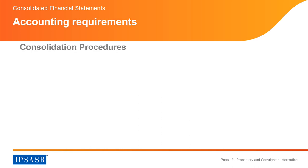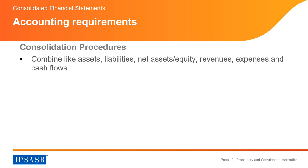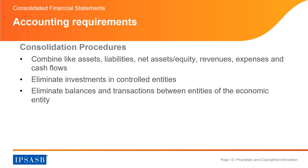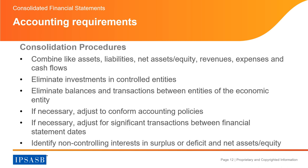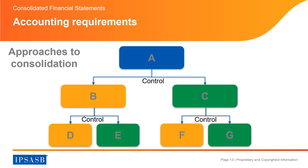Let's turn to accounting requirements. The main consolidation procedures are: combine like assets, liabilities, net assets/equity, revenues, expenses, and cash flows; eliminate investments in controlled entities; eliminate balances and transactions between entities of the economic entity; if necessary, adjust to conform accounting policies; if necessary, adjust for significant transactions between financial statement dates; and identify non-controlling interests in surplus or deficit and net assets and equity.